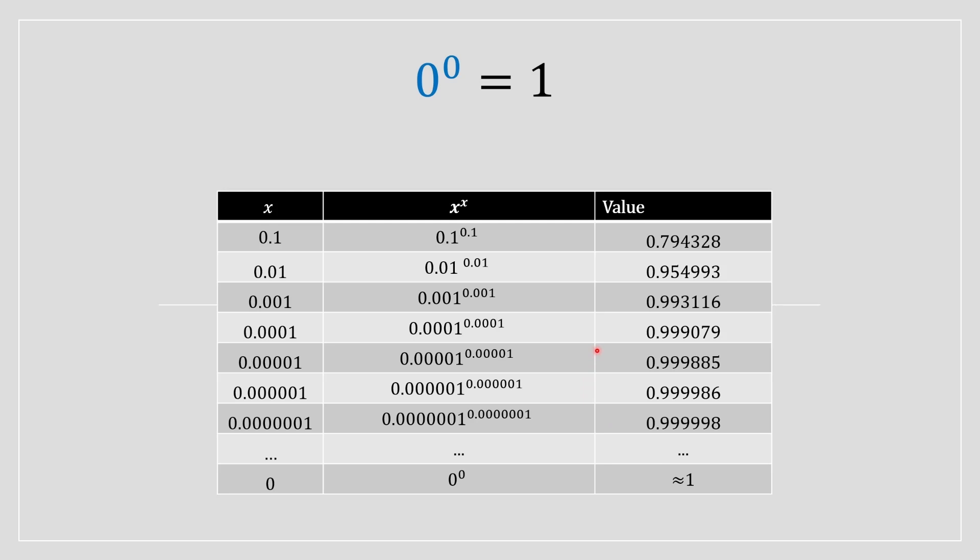And this here is what I like to call, we're looking at approaching 0 from the positive side. Meaning, I started with 0.1 and I'm decreasing slowly and slowly, getting closer and closer. I'm approaching 0 from the positive side because I started with 0.1 and I slowly decrease.